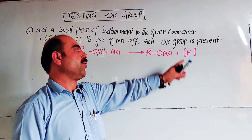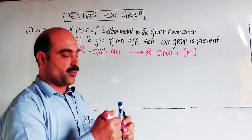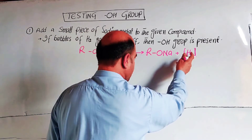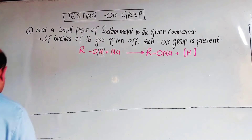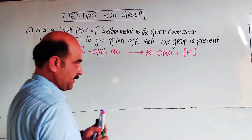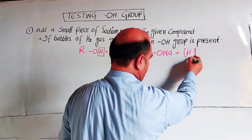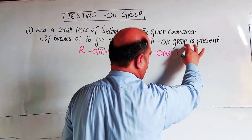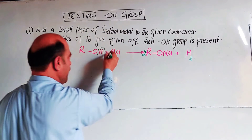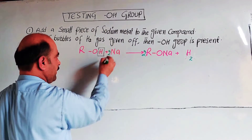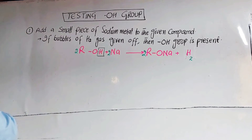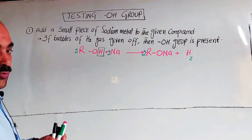This confirms that the OH group is present in the given compound and it is an alcohol. Note that hydrogen cannot exist in atomic state, so it forms H2. Multiply by 2 to balance the equation. That's your first test.